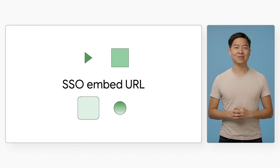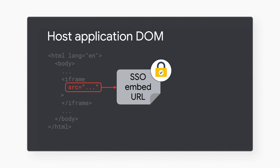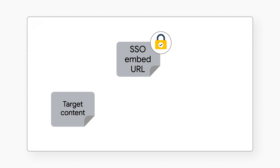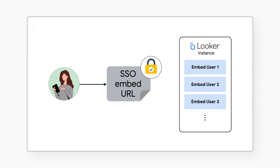Let's look at the SSO Embed URL. How does SSO Embedding allow your user to securely view embedded content without manually logging into Looker? At a high level, SSO Embedding uses a one-time-use URL set on the iframe source — the SSO Embed URL. It contains information about the target Looker content, user access permissions, and other information that determines what your user can do during an embed session. Think of SSO Embedding as URL-based auth, as opposed to UI-based auth with the private embedding option.